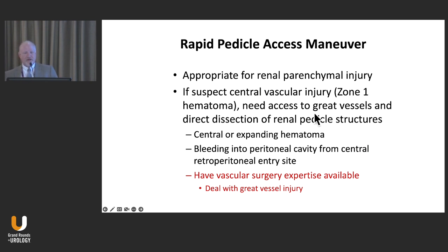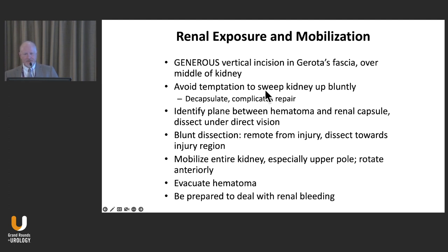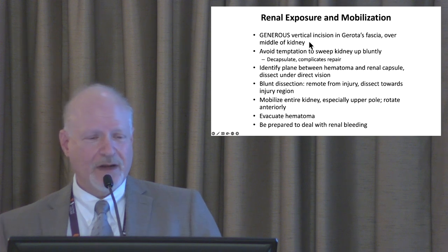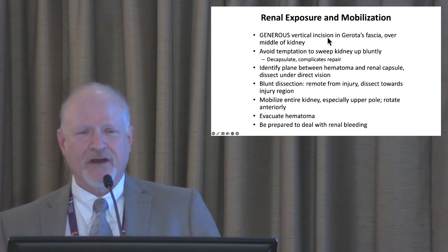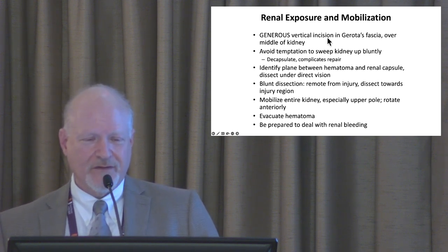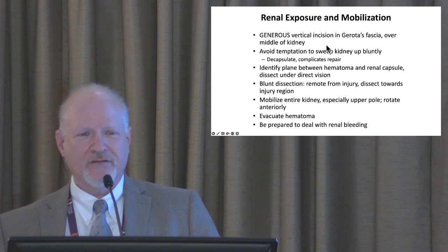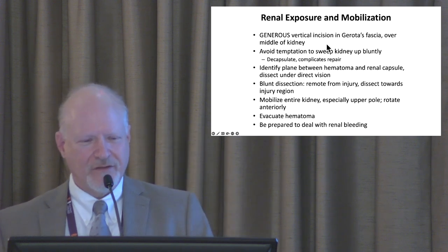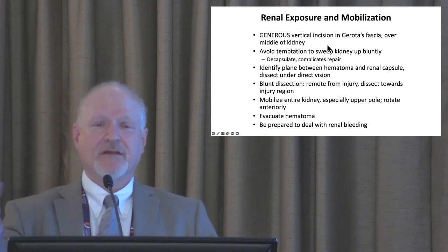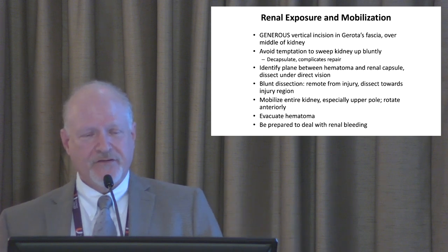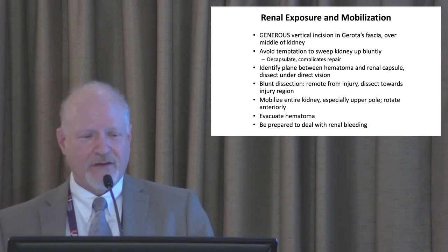Make sure you're not dealing with a zone 1 hematoma of the central abdominal vasculature — no aortic or vena cava injury — then this pedicle access maneuver can be extremely helpful. Once you have pedicle access or control, there's a basic standard approach. You have to rotate the colon on either side so you're looking at the Gerota's fascial envelope.